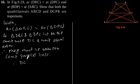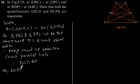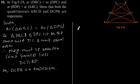Therefore DC is parallel to RP. So DCPR is a trapezium. Similarly, it is also given in the question that...